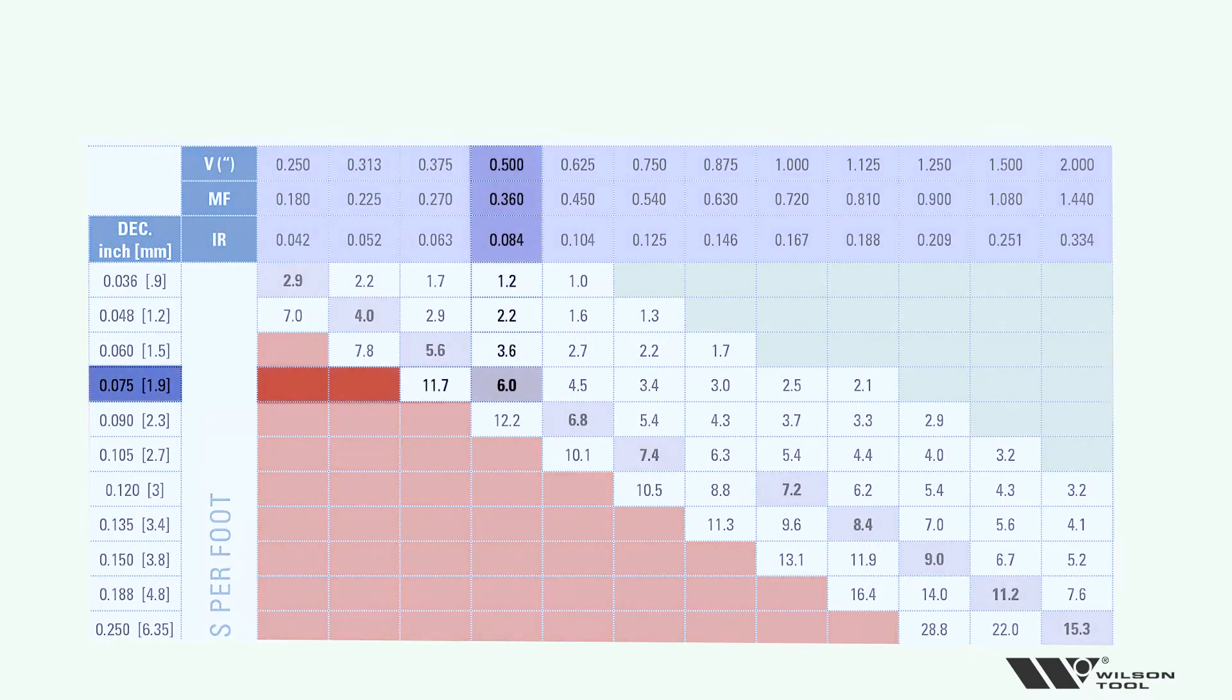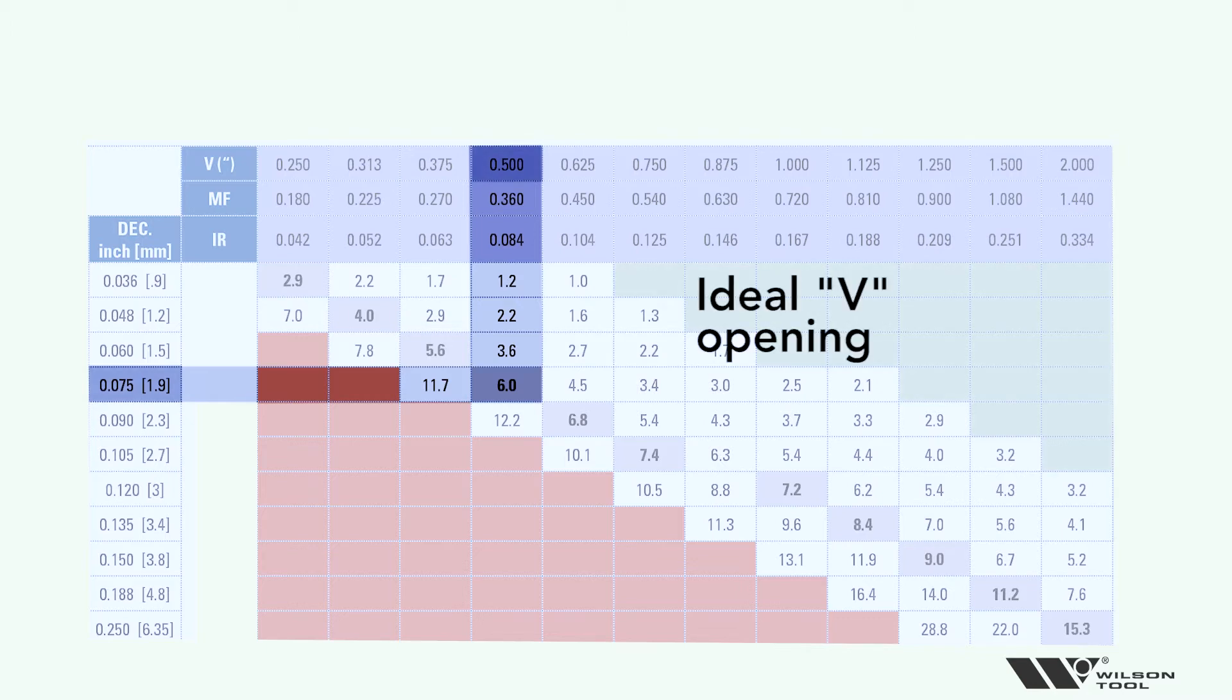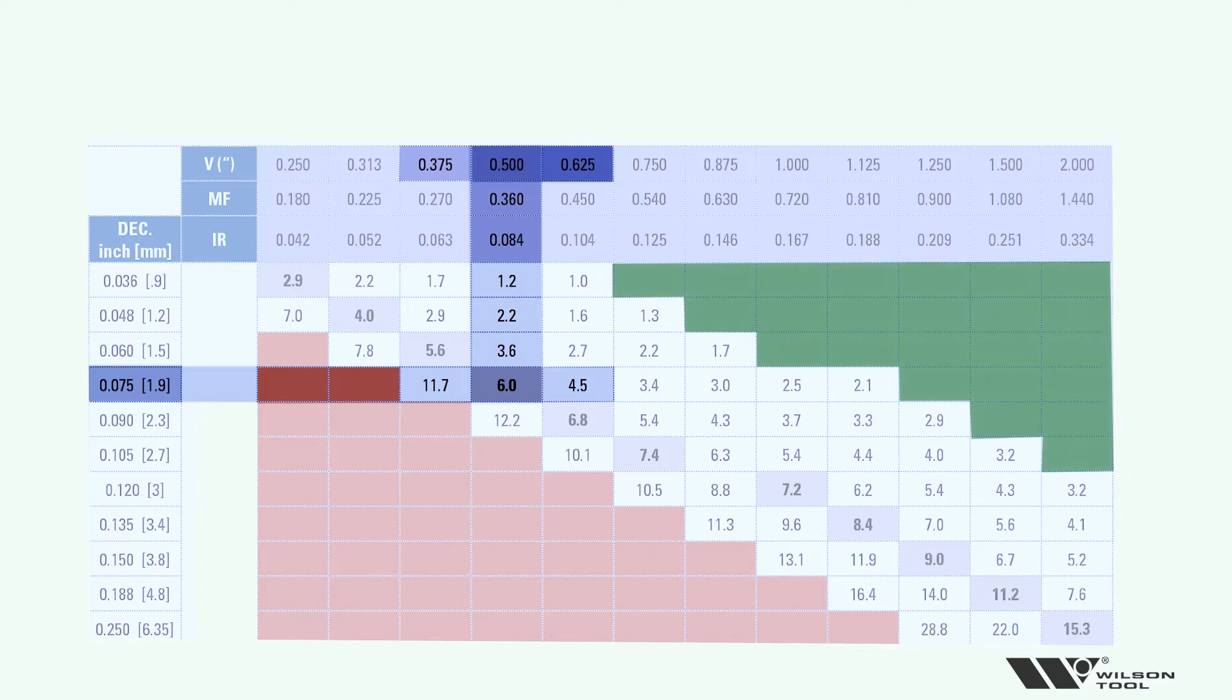If I was to have 075 material and I follow 075 material to the right and I see six tons per foot, I'm running my 075 material in a half inch V opening. We're going to call that the ideal V opening and I could probably take a V opening to either side of that. I could take a smaller V, a bigger V, but if I go to the right and I select that bigger V, the tonnage goes down and if I keep going to the right, it keeps going down to the point where I hit the green area.